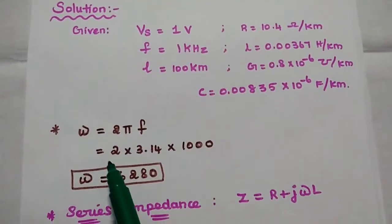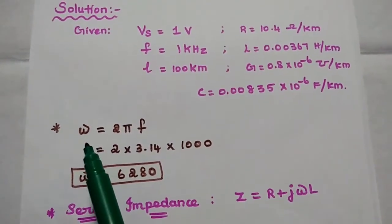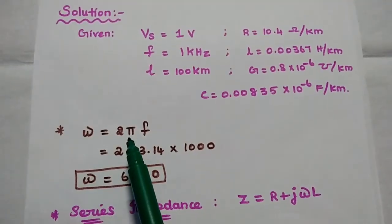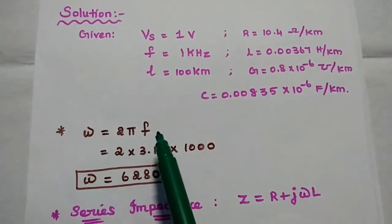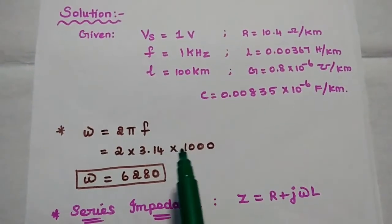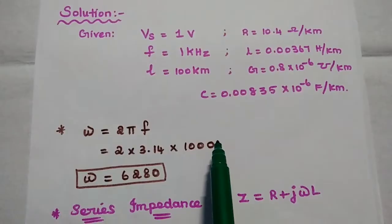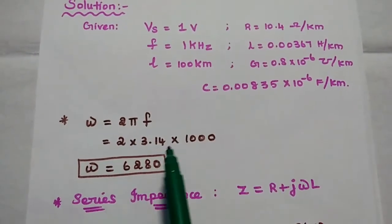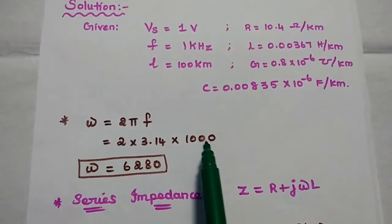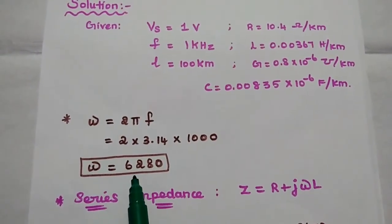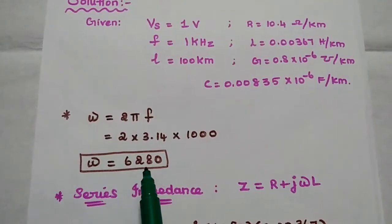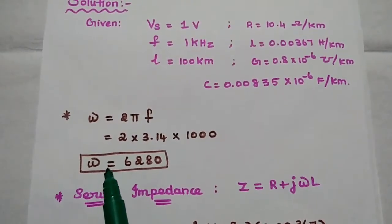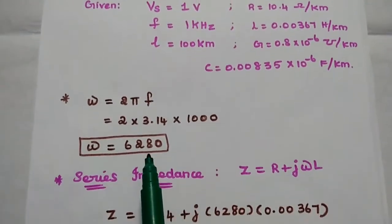The first step is to find the omega value using the formula 2πF. F value is 1 kilohertz, so 2 × 3.14 × 1000 is equal to 6280. This is the value of omega.